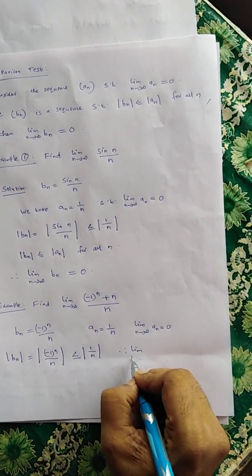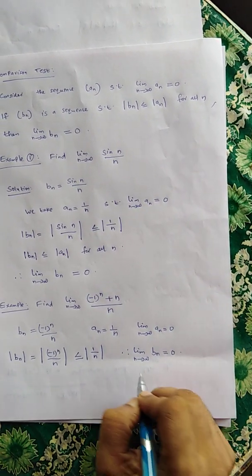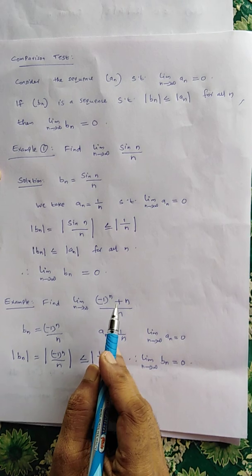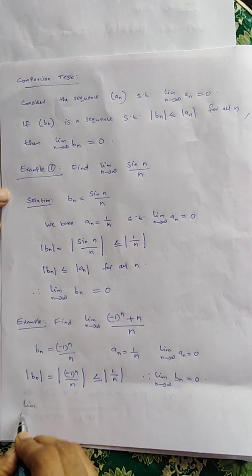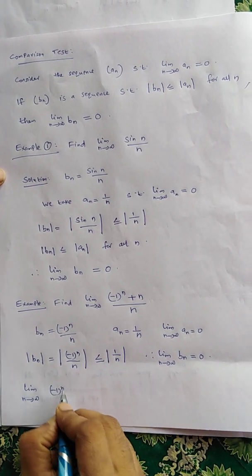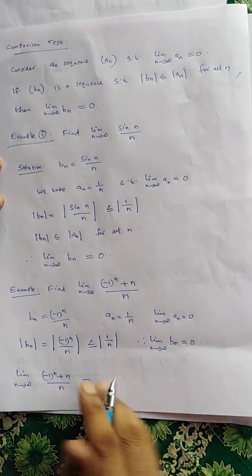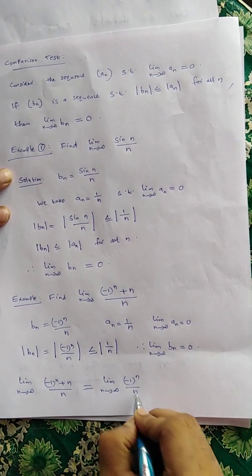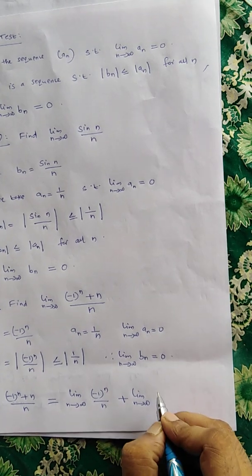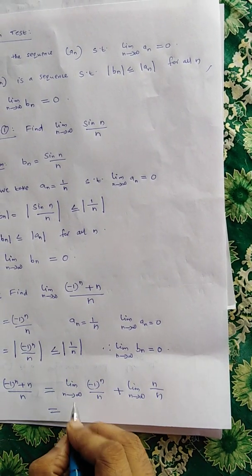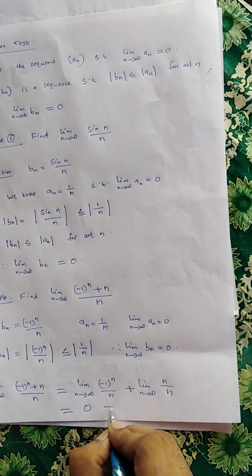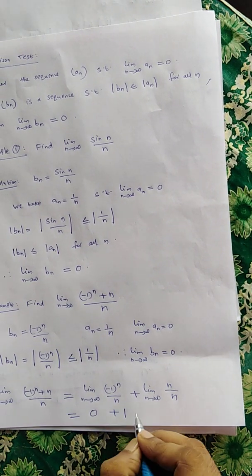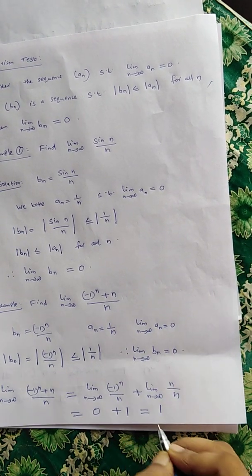Therefore lim(n→∞) (-1)^n / n = 0. But the original sequence is ((-1)^n + n) / n. Using the sum rule: lim(n→∞) ((-1)^n + n) / n = lim(n→∞) (-1)^n / n + lim(n→∞) n/n = 0 + 1 = 1, since n/n is always equal to 1. So the answer is 1.